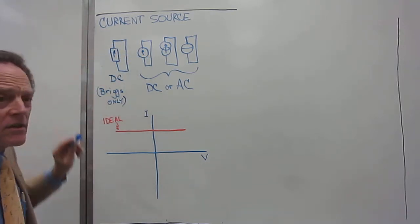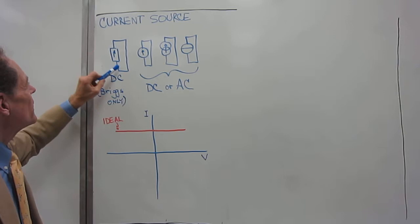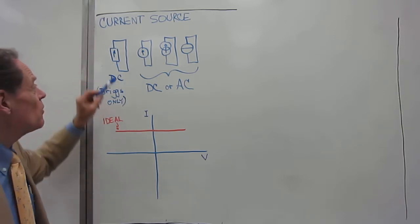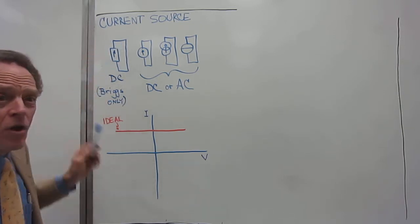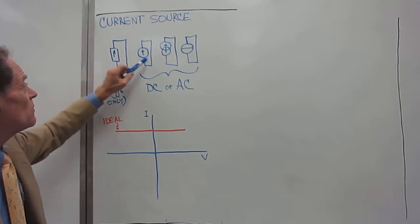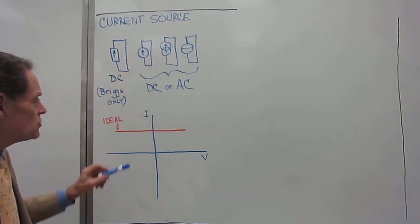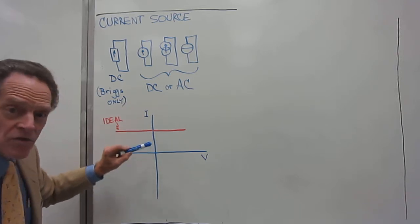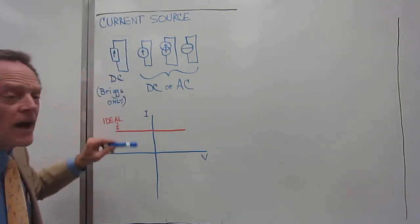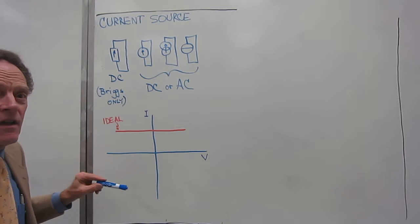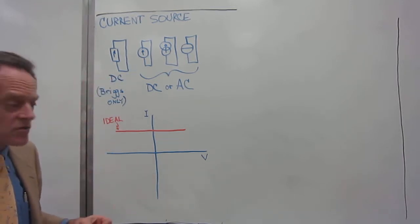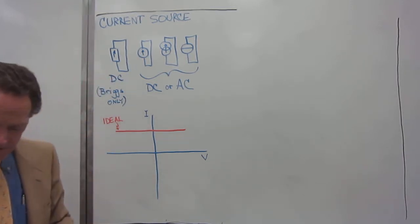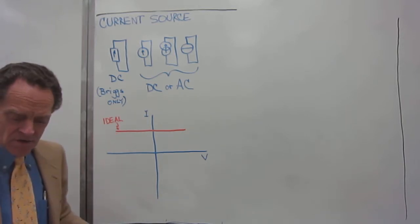We're showing a short circuit from one end to the other of the current source. So there can be no voltage across these current sources in this configuration. So we're right at this point right here. Zero volts, but we're still putting out whatever amount of current that is in the current source, that the current source is providing. But this is for an ideal current source.